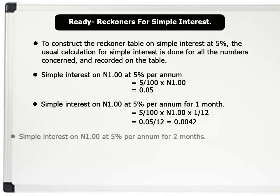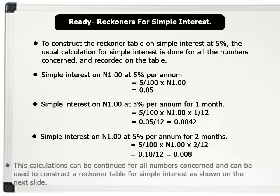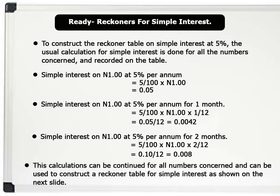Simple interest on 1 nara at 5% per annum for 2 months is 5 over 100 times 1 nara times 2 over 12, which equals 0.10 divided by 12, and that gives us 0.0081. These calculations can be continued for all numbers concerned and can be used to construct a Reckoner table for simple interest, as shown on the next slide.